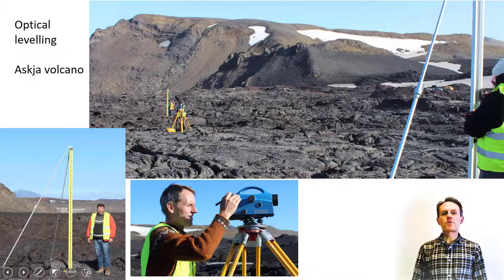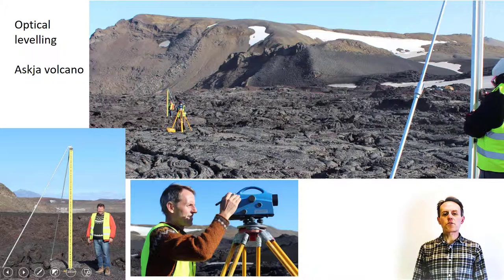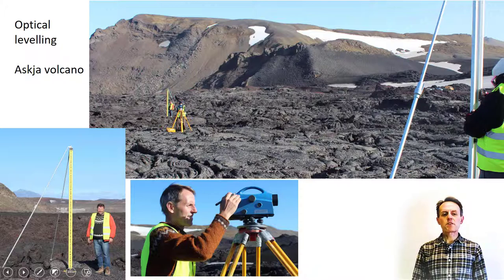Reading of heights on each of the rods is then carried out by using the levelling instrument. By subtracting the reading of the height on each levelling rod, an estimate of the height difference between the two stations is achieved. Typically, a series of geodetic benchmarks are used for this purpose. The levelling rods and instrument are moved between different segments to measure a series of height changes between geodetic benchmarks on levelling lines. If optical levelling is used to get height differences between benchmarks, one can also divide by the distance between benchmarks and infer ground tilt.